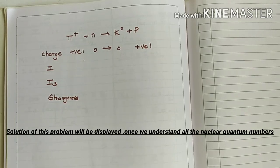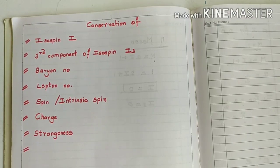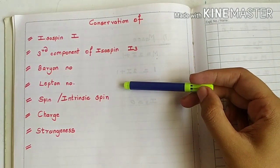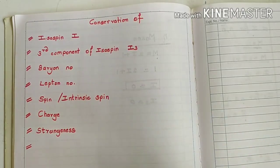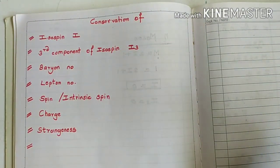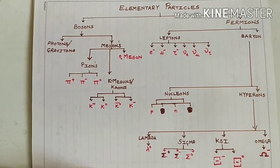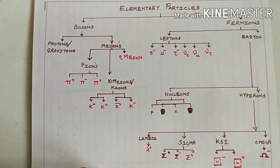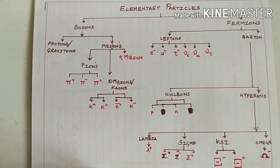The next thing we are going to understand is all the different quantum numbers relating to nuclear particles. These are the quantum numbers for elementary particles: isospin, third component of isospin, baryon number, lepton number, spin, charge, and strangeness. In today's video we are going to understand isospin and the third component of isospin; the rest of the quantum numbers we will cover in the next video. Before we move on, I expect you to note the chart on the screen — this is a complete classification of all elementary particles in nuclear physics. Pause the video and note it down.